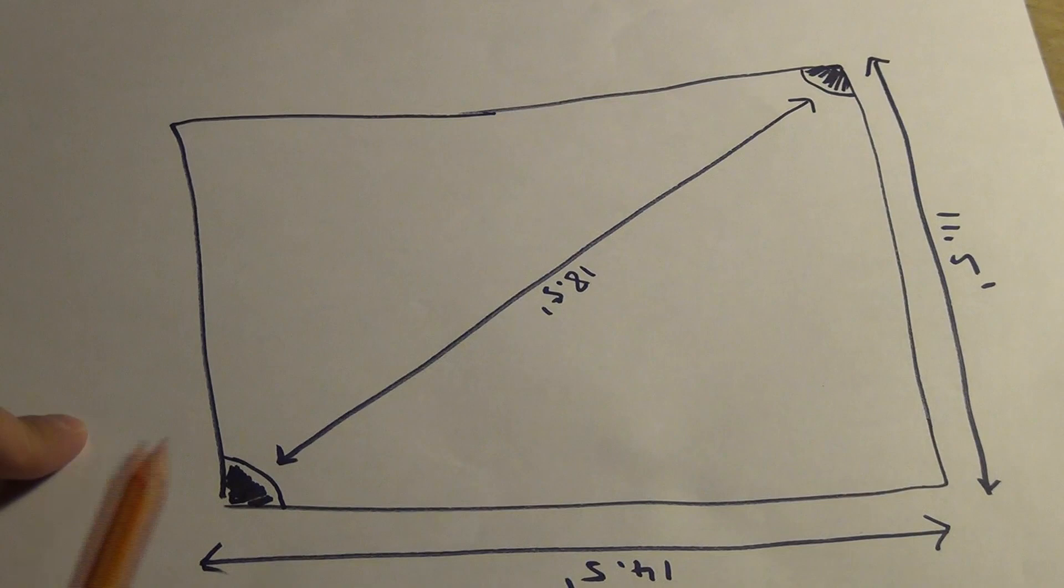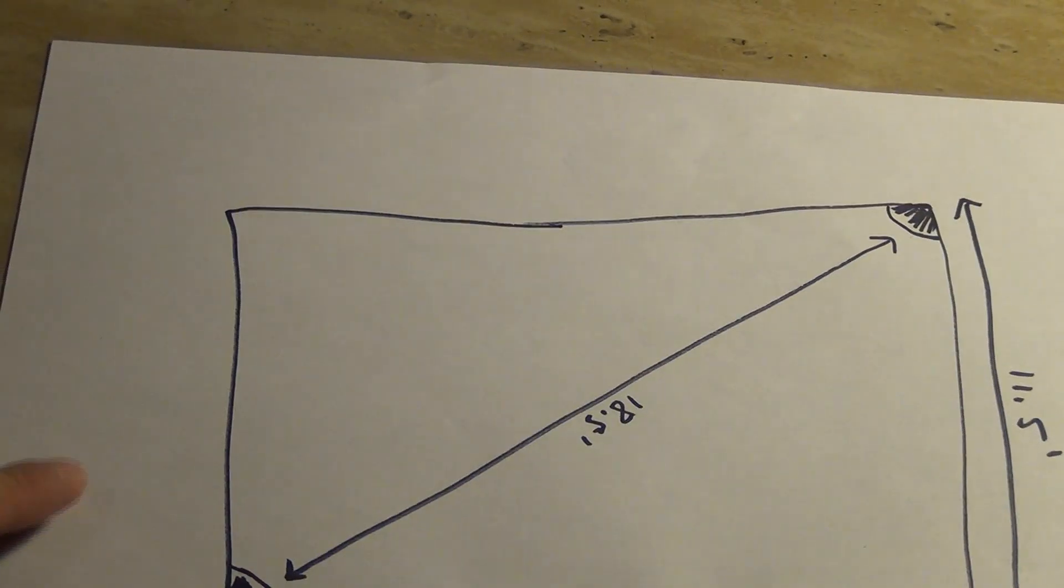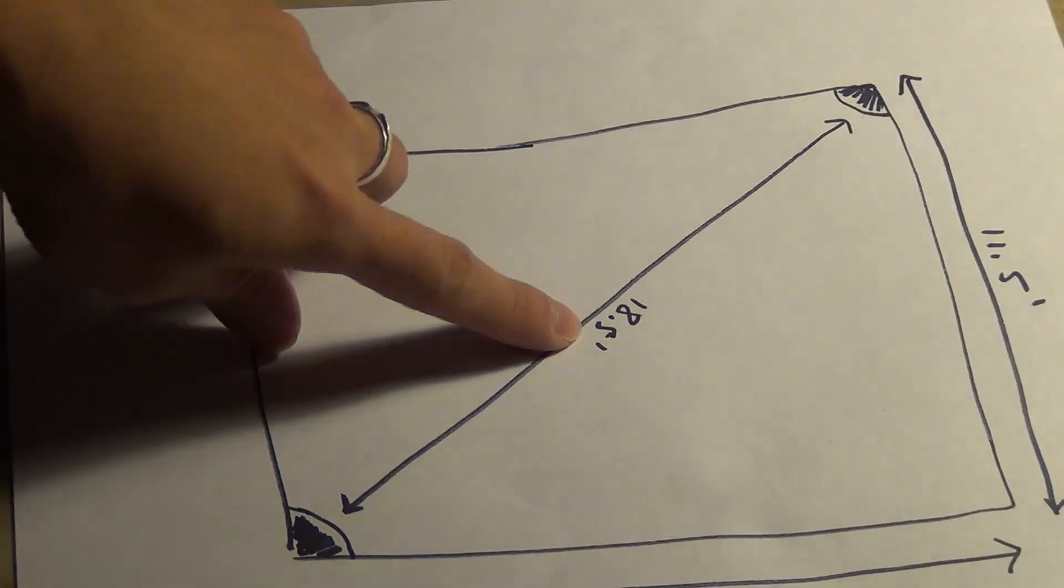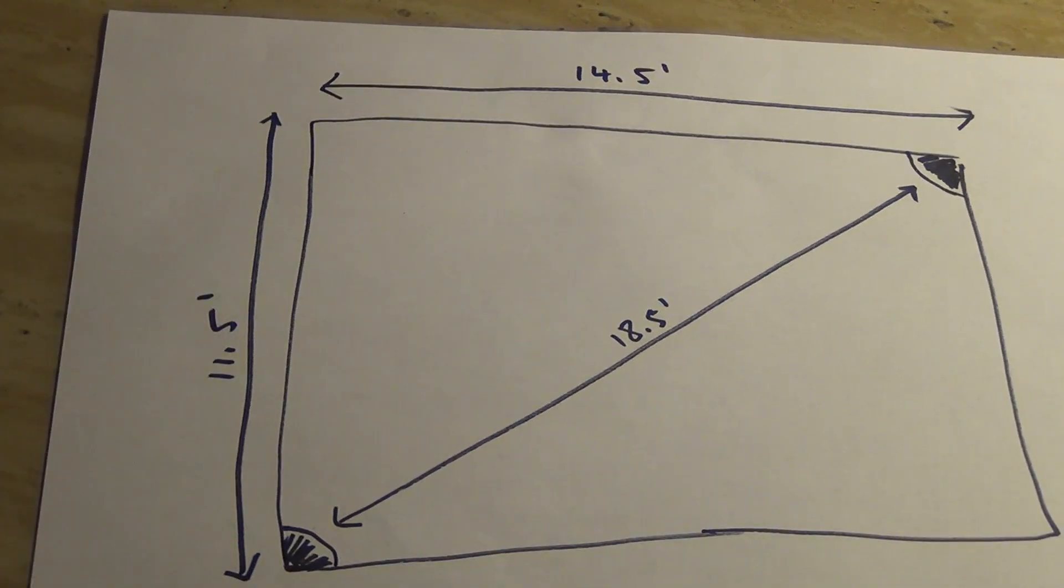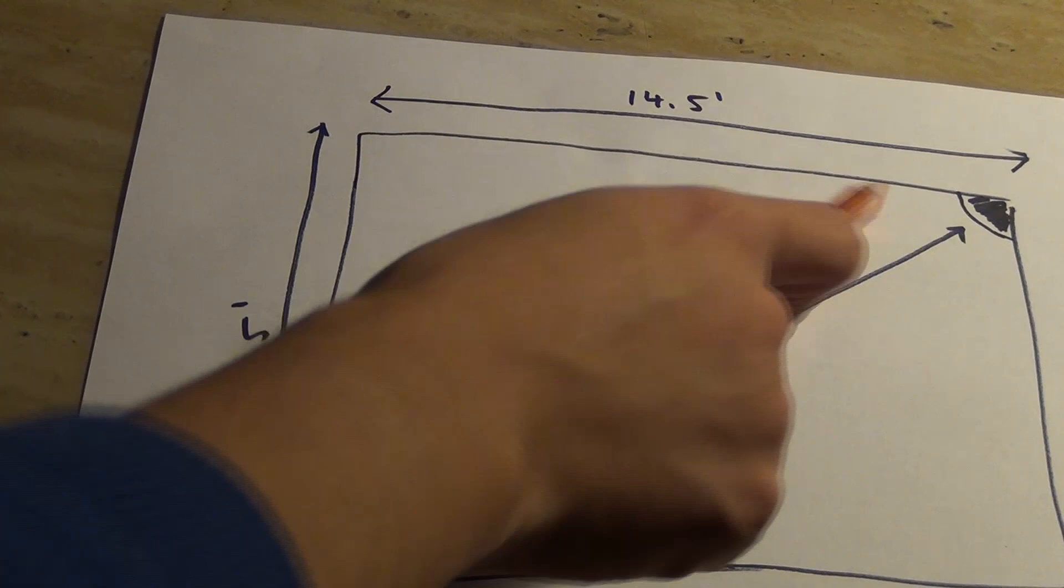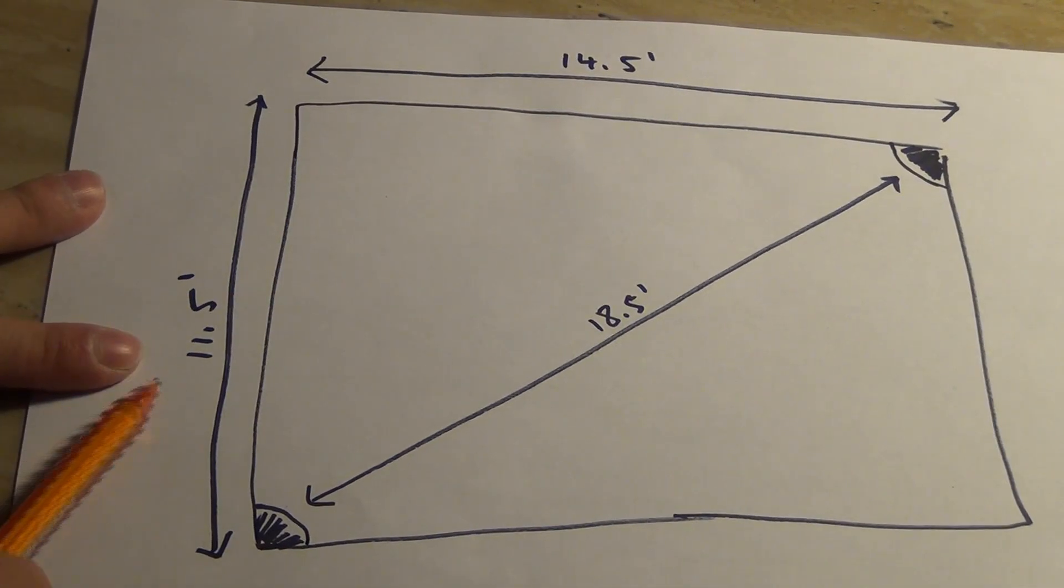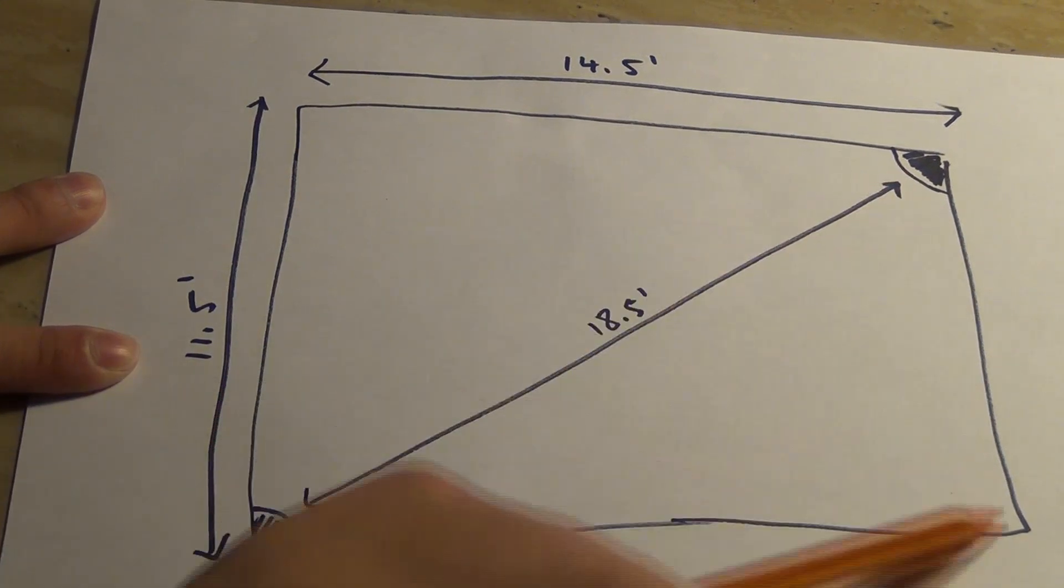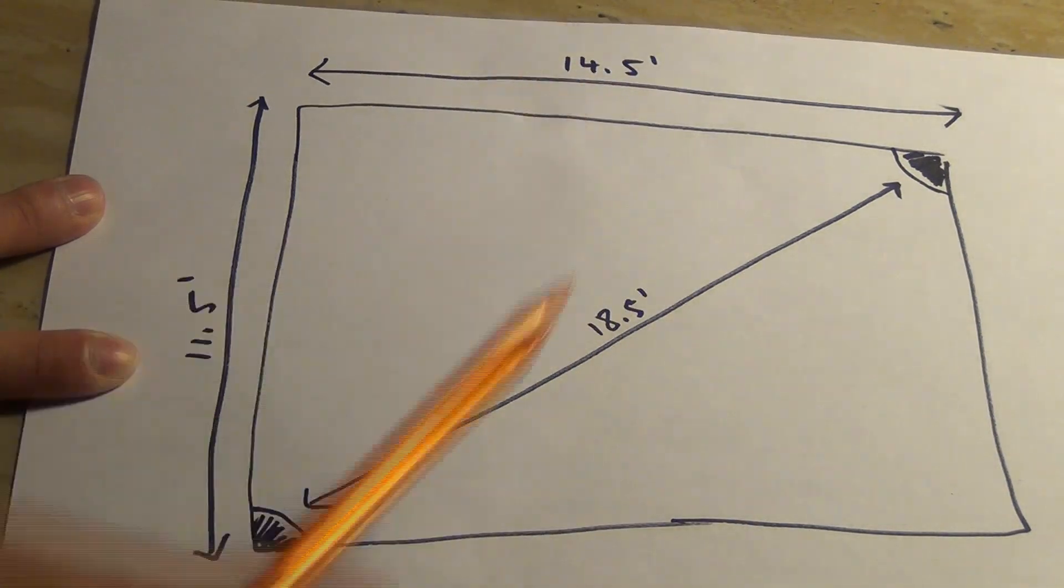Now right here you see this thing right here is my one sensor, this is the other sensor. Now the distance between the two sensors here is about 18 and a half feet. This is my room right here, excuse my drawing. The distance from here to here is about 11 and a half feet, and this distance over here is about 14 and a half feet.